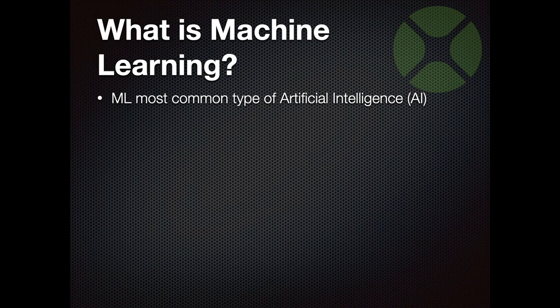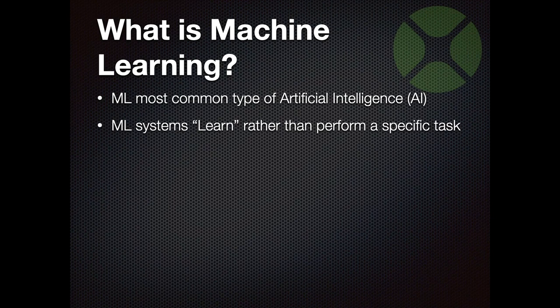Machine learning - and that was supposed to be a demo of machine learning - is the most common type of artificial intelligence. Pretty much everything you hear about artificial intelligence is really machine learning. That's the elephant in the room at this point. This is all about systems that are designed to learn rather than perform a specific task.